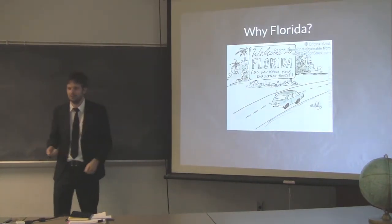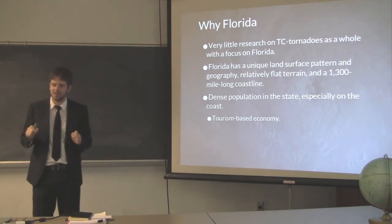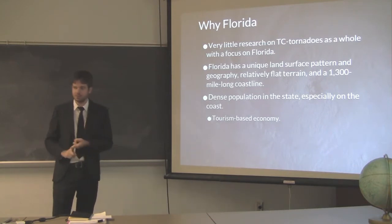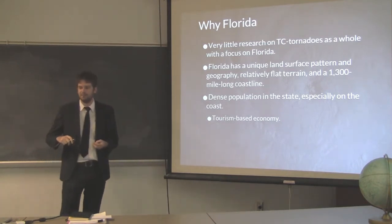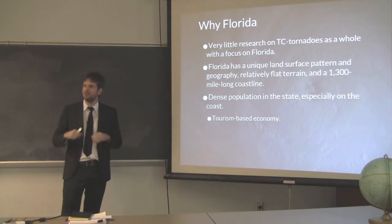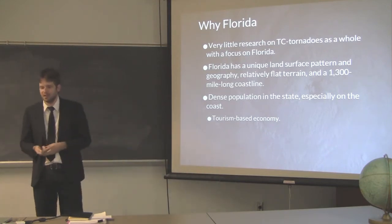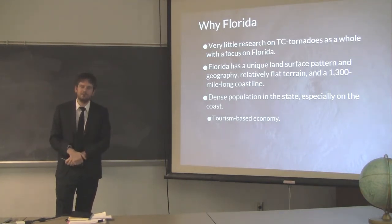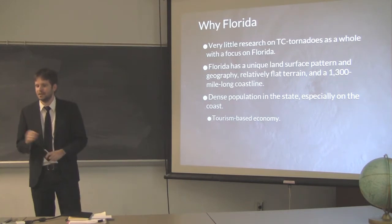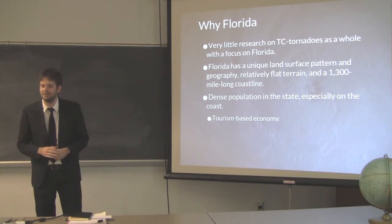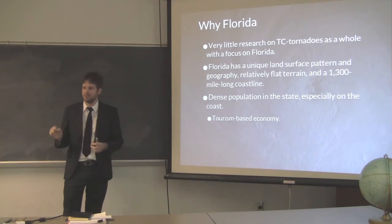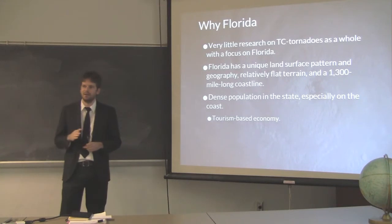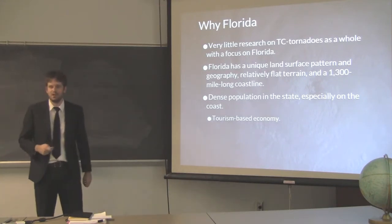So why pick Florida? Very little research has been done on TC tornadoes as a whole for this state — some research on individual storms like Ivan, or broad-scale studies for the southeast or entire U.S. mainland. Florida has a unique land surface geography: relatively flat terrain, a 1,300-mile coastline, high population density especially along the coast, and a tourism-based economy that could amplify economic impacts from this added feature of tropical cyclones.